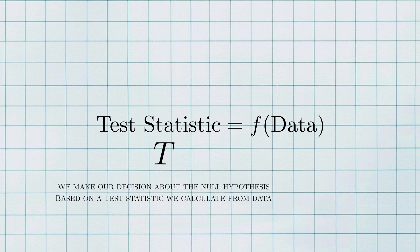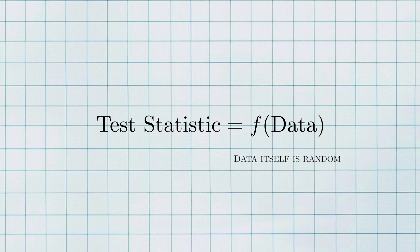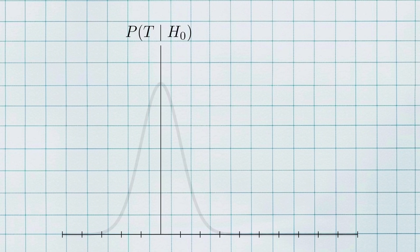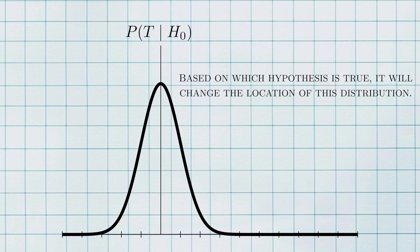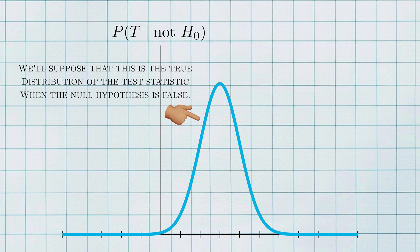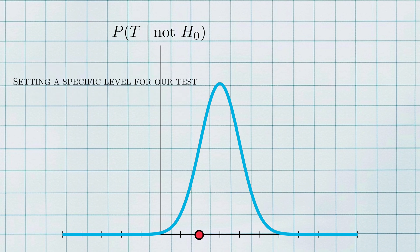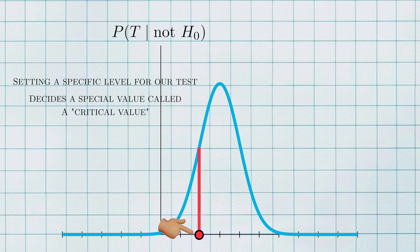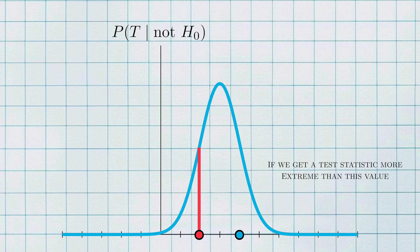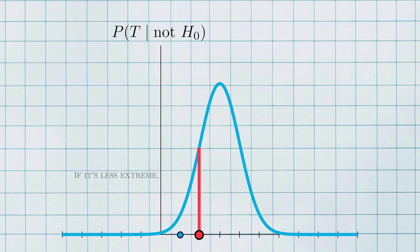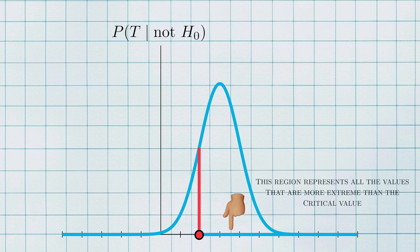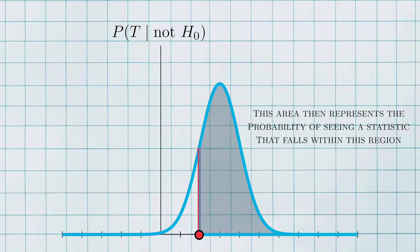To understand this better, let's walk through a visualization. We make a decision about the null hypothesis based on a test statistic that we calculate from data. But since data itself is random, the test statistic will also be random. This gives the test statistic a probability distribution. Based on which hypothesis is true, the location of this distribution will change. Let's say that this is the distribution of the test statistic when the null hypothesis is false. When we decide on a particular level for a hypothesis test, we're actually deciding on a special value called a critical value. If we get a test statistic that's more extreme than this critical value, then we reject the null hypothesis; if it's not, then we fail to reject. The corresponding area with this region represents the probability of observing the test statistic in this region, and thus represents power.